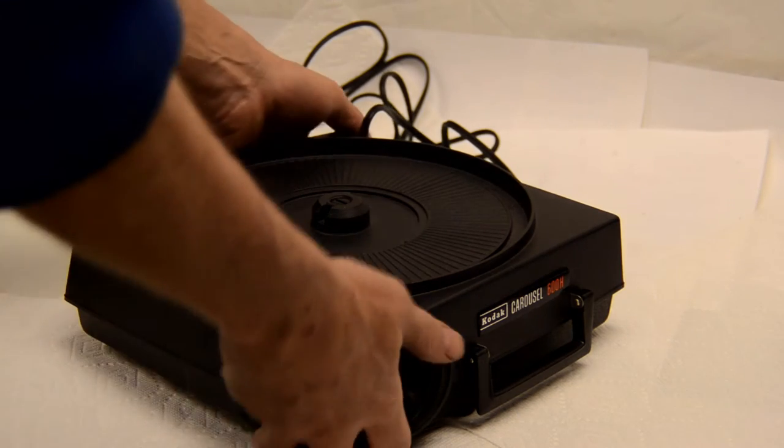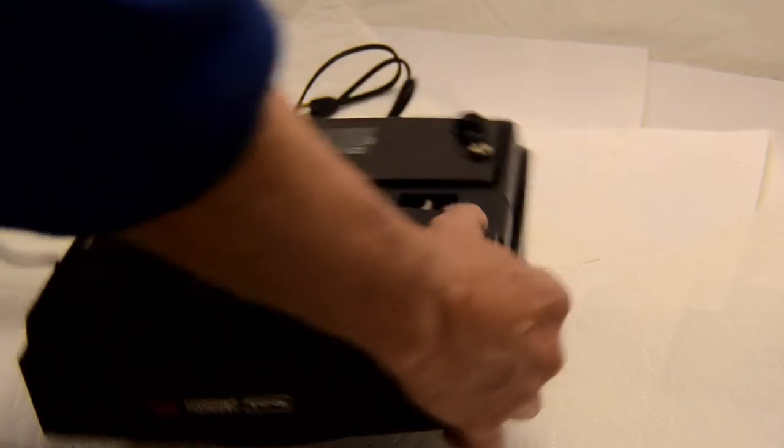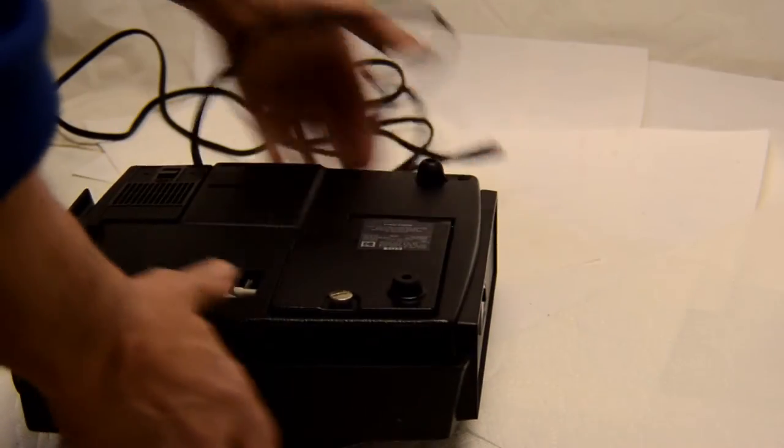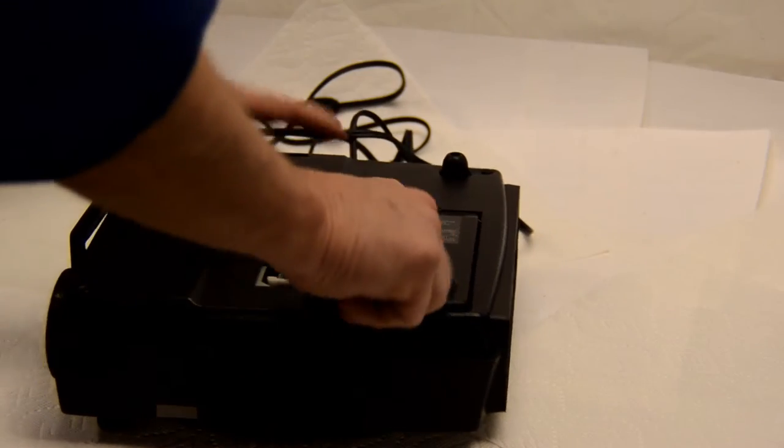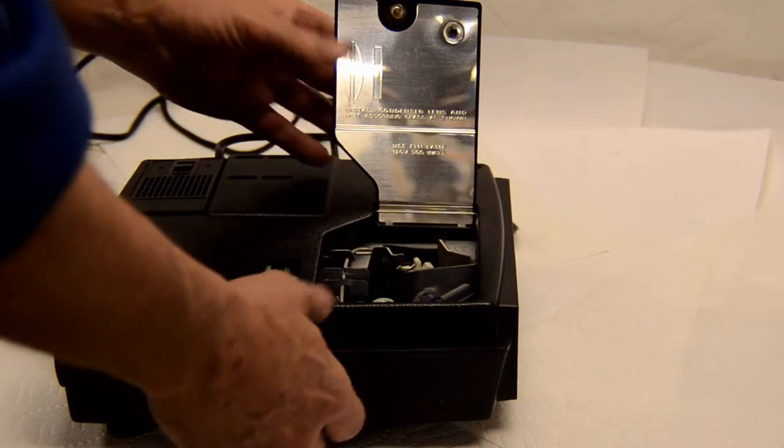Kodak Carousel 600H. OK, so real quick we're going to change the burnout lamp on this Kodak Carousel 600H. Start by turning it over and open up the lamp compartment.